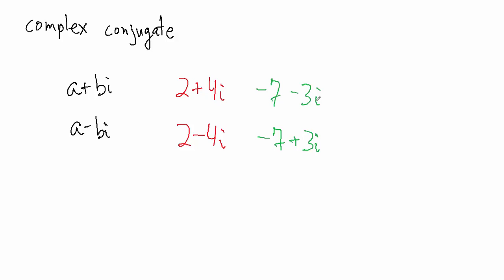So negative 7 minus 3i is a complex number, then the complex conjugate of that number is negative 7 plus 3i. Just change the sign of the imaginary part to get the conjugate. What if we have something like 4i just by itself? Well, that's the same as 0 plus 4i, so the complex conjugate would be 0 minus 4i, which is really just the same thing as negative 4i.